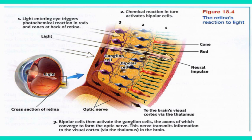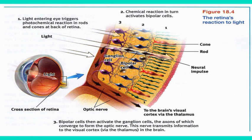Once it goes down that optic nerve, it first goes to the thalamus. Remember, the thalamus takes in all senses except for smell and sends them where they need to go. So the thalamus takes that neural message and sends it to the occipital lobe, where the occipital lobe can process that vision and interpret those neural messages to give us the ability to see.